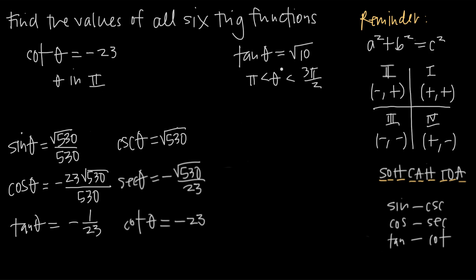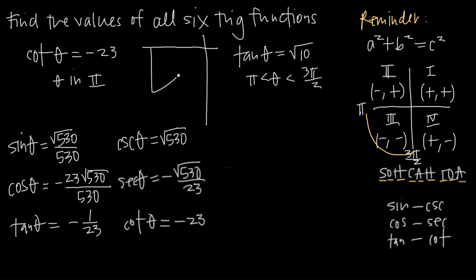Now for a second example: tangent of theta equals square root of 10 and the angle theta is between pi and 3pi over 2. Looking at the unit circle, pi is at the left and 3pi over 2 is at the bottom, so theta is in quadrant three. We draw a right triangle in quadrant three with theta at the origin.